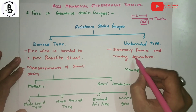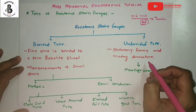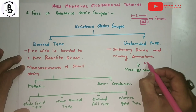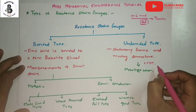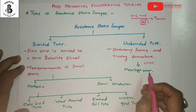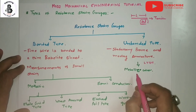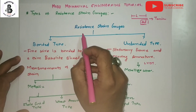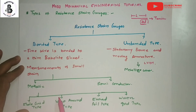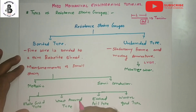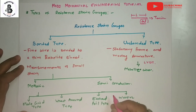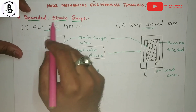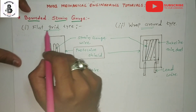In the unbonded type, a stationary frame and a moving armature are used. This is similar to an LVDT arrangement for measuring strain or displacement, using a metallic wire structure. Now, focusing on bonded type strain gauges in more detail — the first one is the flat grid type, which helps measure strains in different systems.